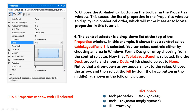Fifth step: choose the alphabetical button on the toolbar in the Properties window. This causes the list of properties in the Properties window to display in alphabetical order, which will make it easier to locate properties in this tutorial. Sixth step: the control selector is a drop-down list at the top of the Properties window.